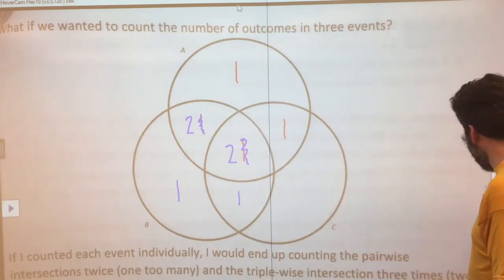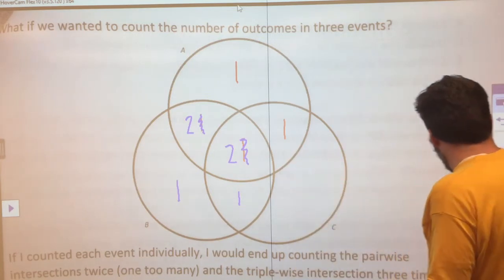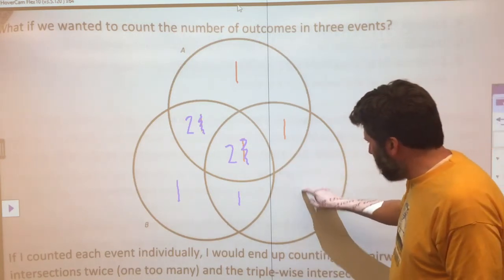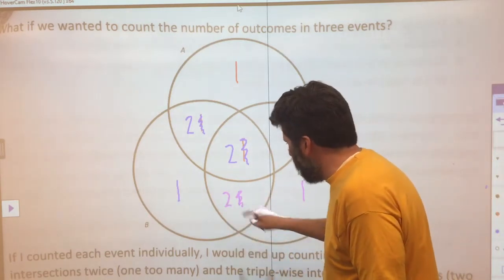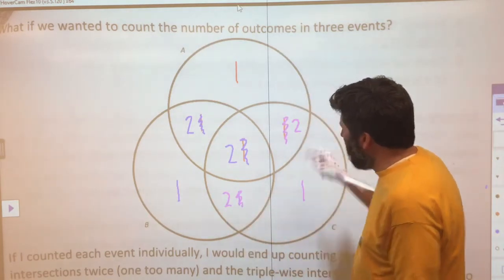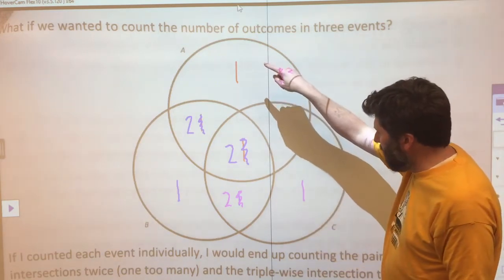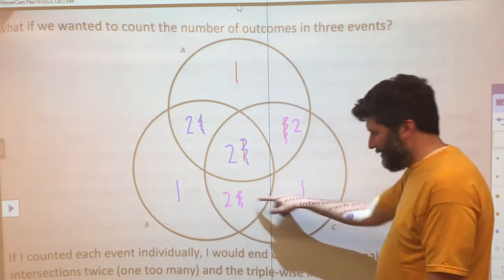Let's do the same thing for C. This thing in C has been counted once, but then these two things have now been counted twice by virtue of being in A and C, and B and C.